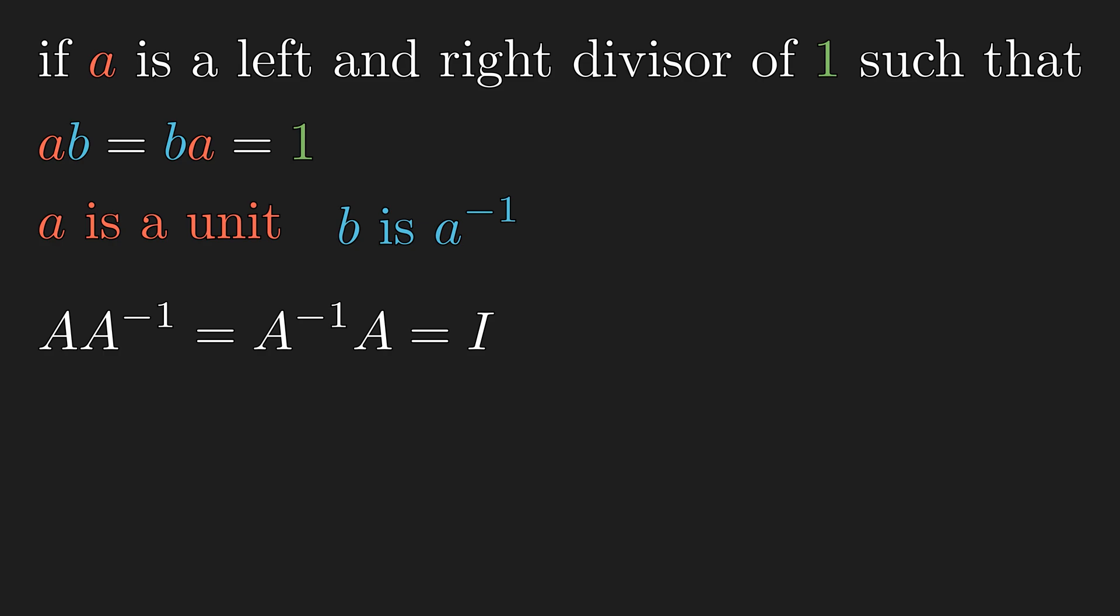This is the typical textbook definition of what a unit is, and it does feel a little restrictive on what the other divisor can be. And I want to ask, is it possible for A to be both left and right divisor such that the other divisor is different?